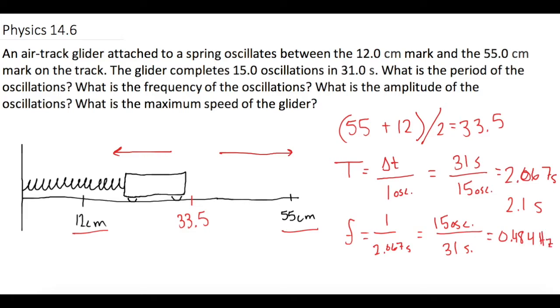Now they say, what is the amplitude of the oscillations? An amplitude is from the equilibrium point, how far over is it going to go on either side. We can take the absolute value of this distance or this distance. If I do 55 minus 33.5 that will give us 21.5 centimeters is our amplitude, or A.